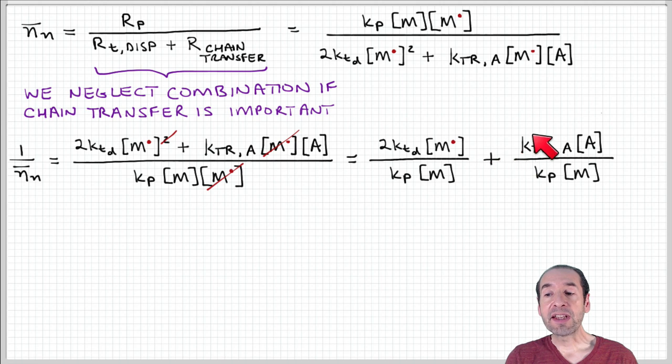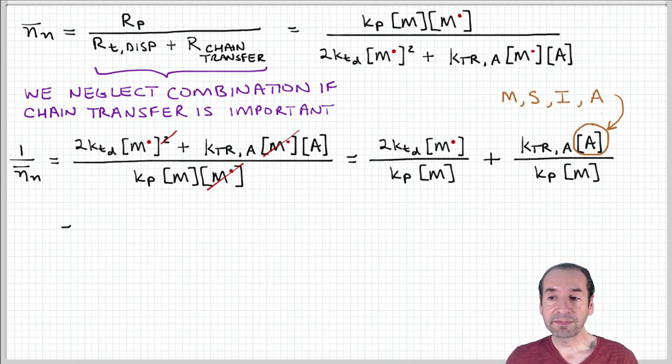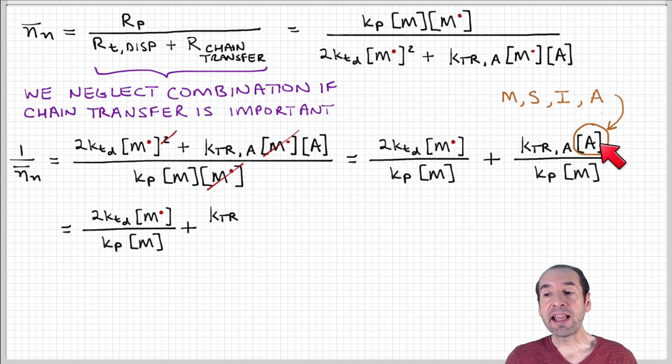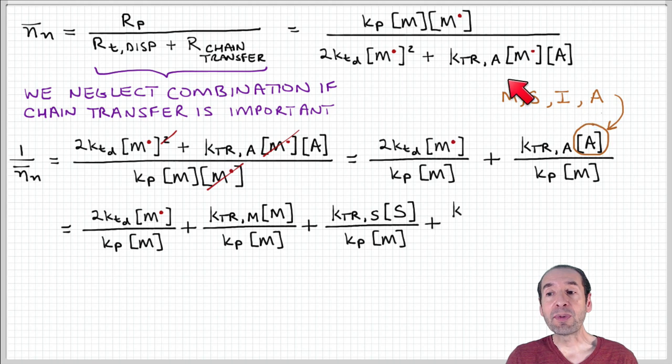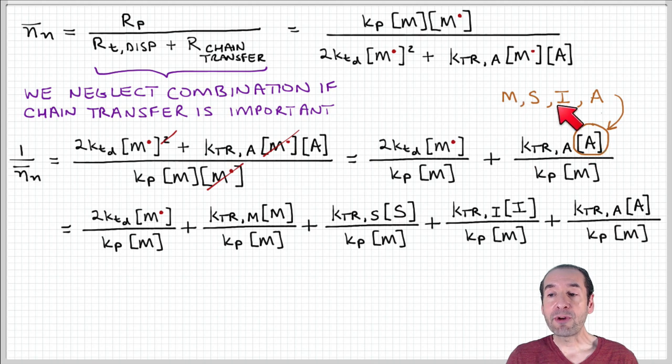And then I get a second term. That's the ratio of the rate constant associated with chain transfer times the concentration of the chain transfer agent divided by the propagation rate constant times the monomer concentration. Now remember that this A can be several different possible processes. So I can expand then this by defining a separate term for each of these species. So I have a transfer to monomer, I have a term associated with transfer to solvent, I have a term associated with transfer of the initiator, and a term associated with transfer to the agent.